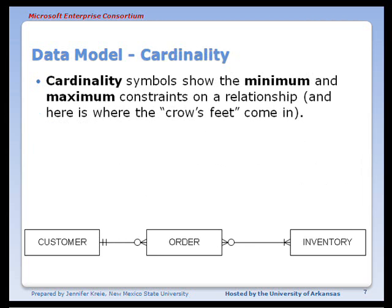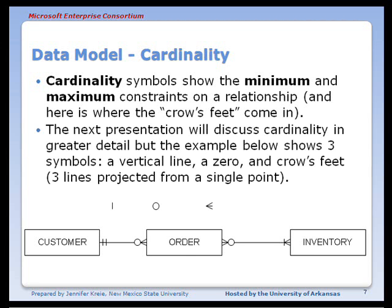The last concept presented here is cardinality. Cardinality shows the minimum and maximum allowable constraints on a relationship — and this is where the crow's feet term comes in. As we add cardinality to the relationship, we have symbols like a vertical line, a zero, and the crow's feet, which are three lines projected from a single point. The next presentation will talk about these in much greater detail.